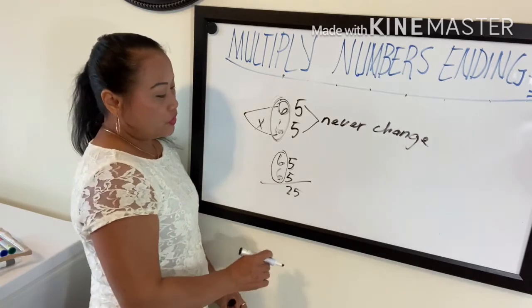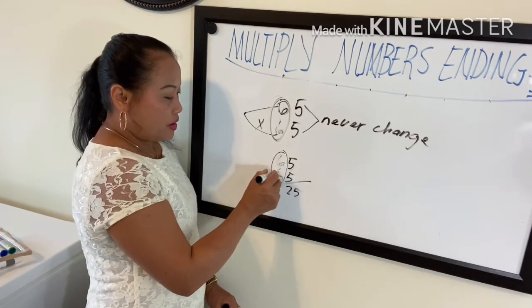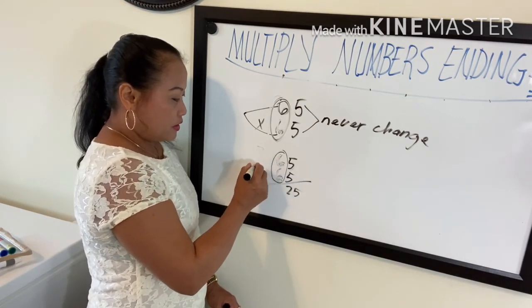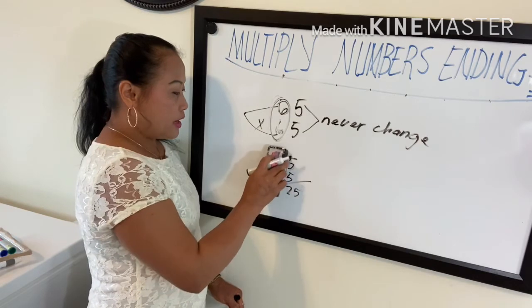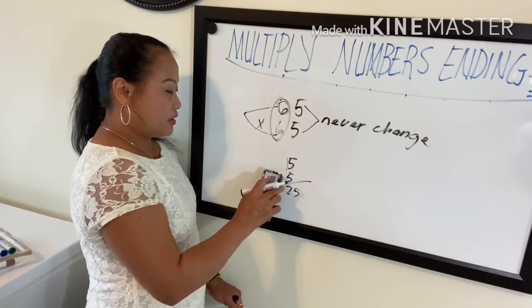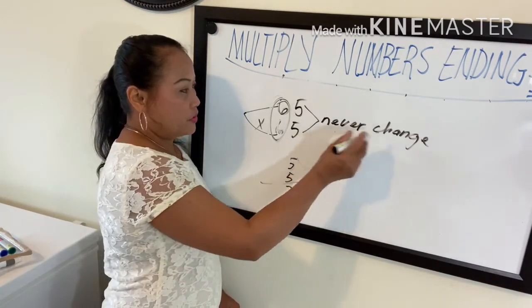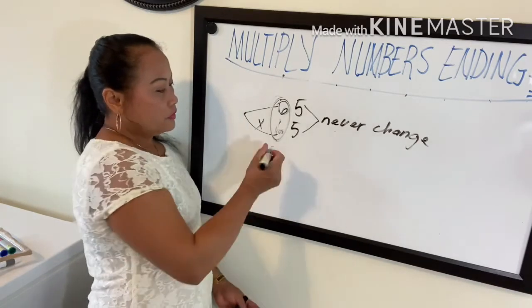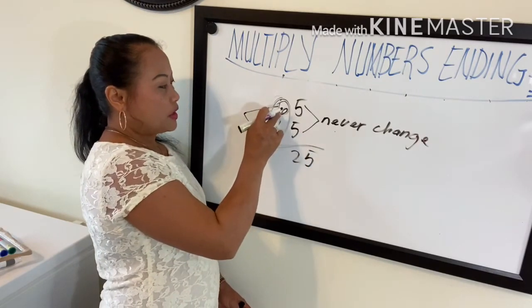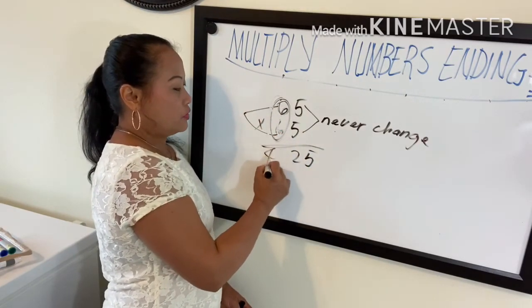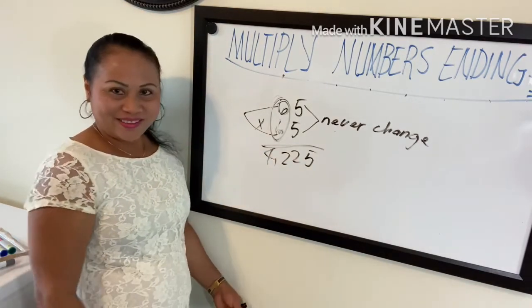Always the same number — you can change it to seven-seven, five-five, four-four — but they must always be the same pair. The five never changes. So once again for 65 times 65: five times five is 25, six becomes seven, seven times six is 42 — the answer is 4225. It's so easy!